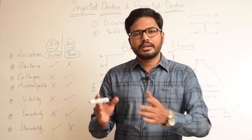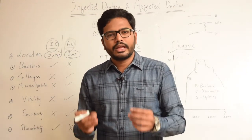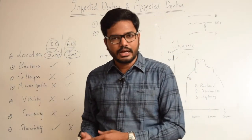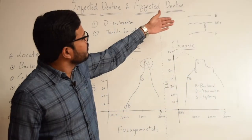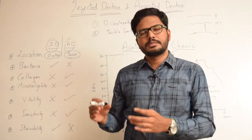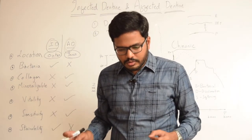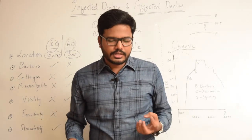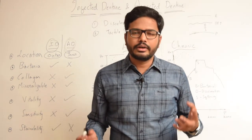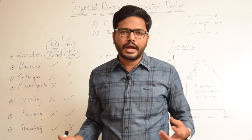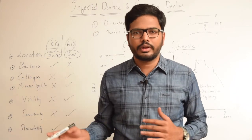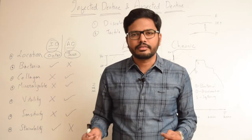So this is in brief about the various differences between infected and affected dentin, the clinical parameters commonly used to differentiate them, the role of caries detector dyes, and the graph given by Fuseyama et al. based on bacterial, discoloration, and softening fronts, along with the interpretation and clinical application of these graphs. Understanding these basic concepts is essential — not just for answering multiple choice questions, but so you can apply them with greater confidence clinically, knowing when to remove dentin and when to preserve it based on whether the caries is acute or chronic. Thank you very much.